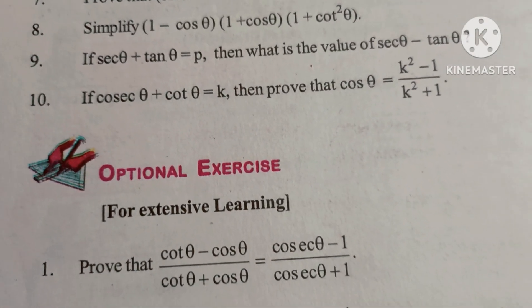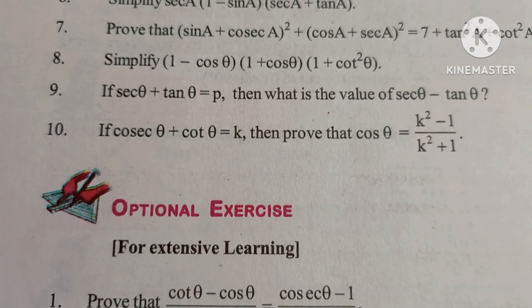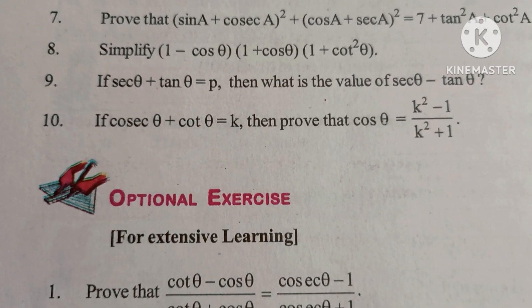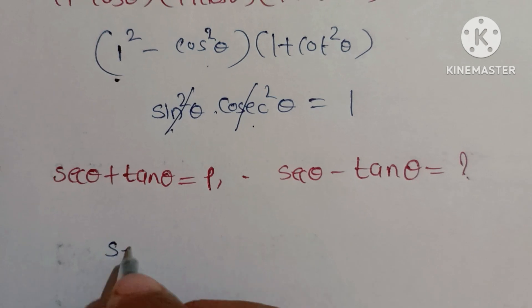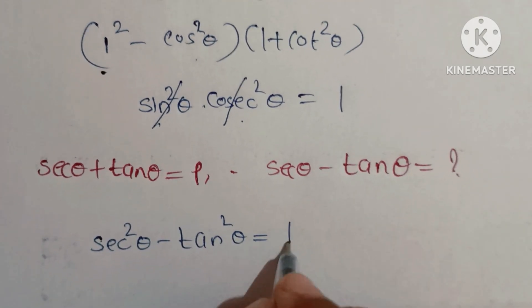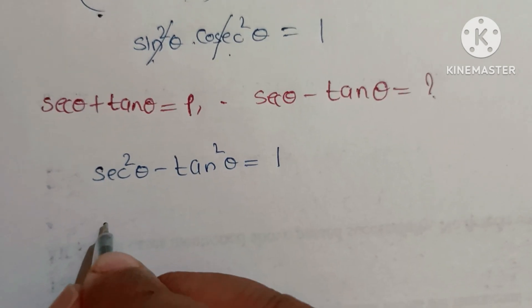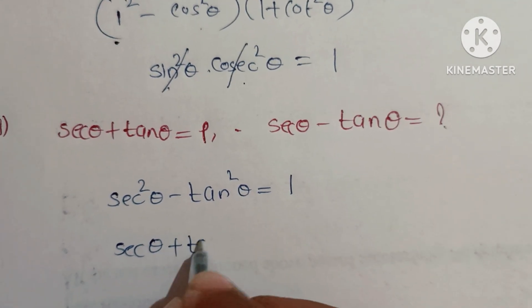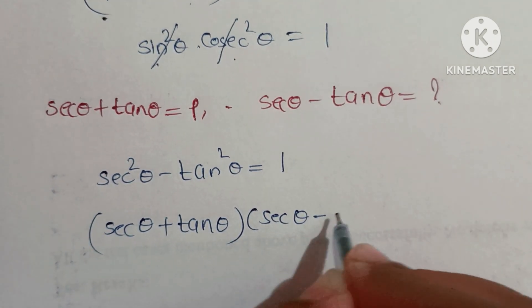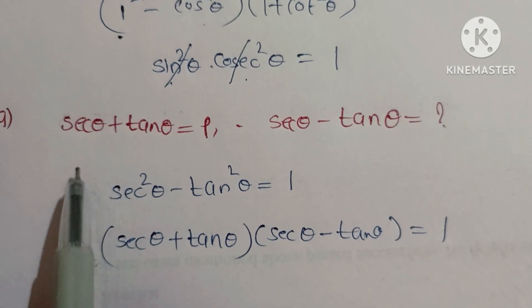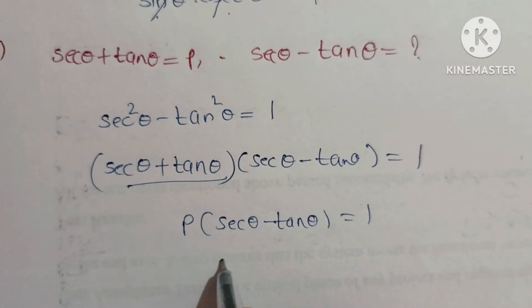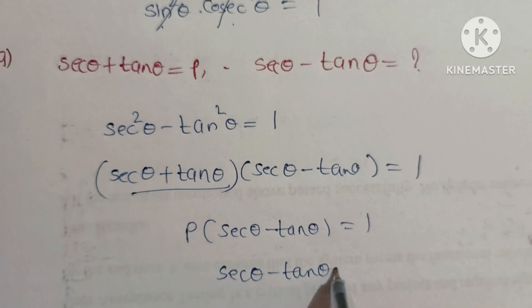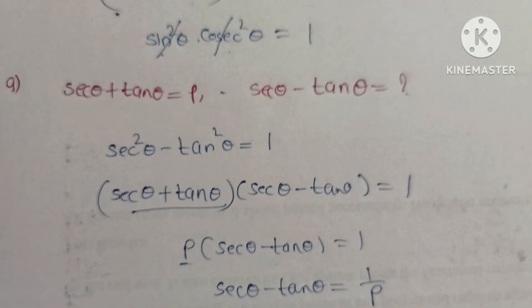9th problem: If secθ + tanθ = p, find secθ - tanθ. We know the identity sec²θ - tan²θ = 1. This factors as (secθ + tanθ)(secθ - tanθ) = 1. Since secθ + tanθ = p, we get p × (secθ - tanθ) = 1, so secθ - tanθ = 1/p.